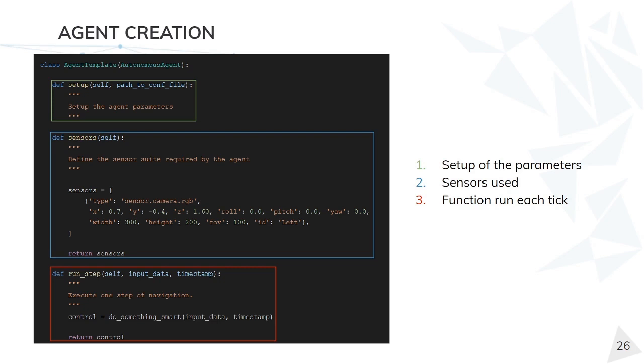It has two arguments: input data, which is the data retrieved by the sensors at that frame, and timestamp with temporal information about that frame. We have many examples at Scenario Runner at srunner.autoagent. So go take a look.